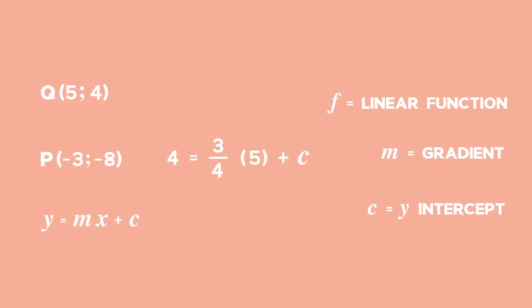The formula now reads 4 equals 3 over 4 times 5 plus c. Now in order to solve for c, multiply 3 over 4 by 5, which will give you a value of 15 over 4. From there, you will have to switch the formula around so that it reads c equals 4 over 1 minus 15 over 4.